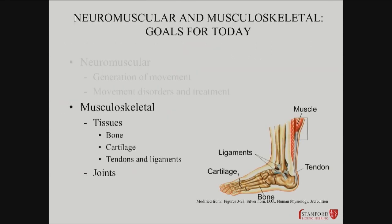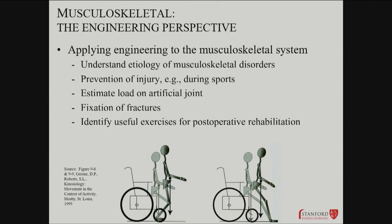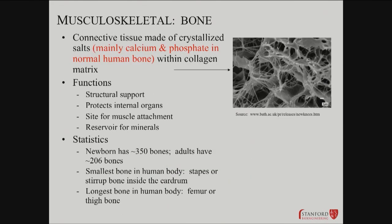We've talked a lot about the neuromuscular junction. But now there's a whole host of things on the skeleton and the tissues that link to the muscle — bone, cartilage, tendons, ligaments, and joints. Also a big part of bioengineering. This falls into many categories: where do musculoskeletal disorders arise from? How can you prevent injury? How can you design artificial joints? How can you repair fractures? Best kinds of rehab? And there's a huge market.